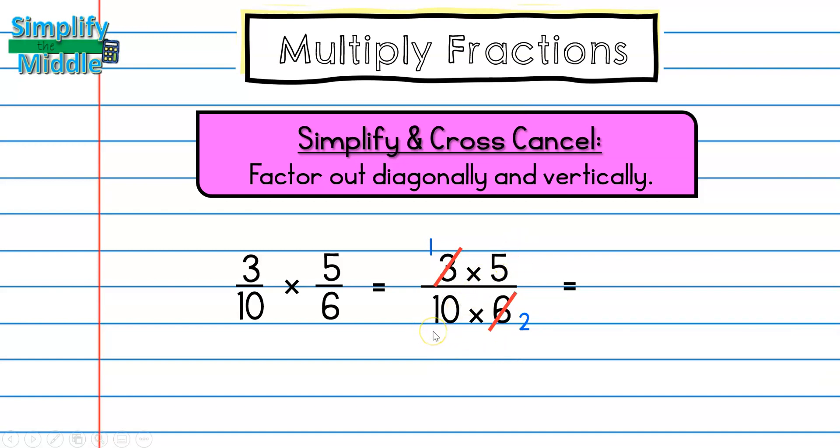Across I have 5 and 10 have a common factor of 5. So if I cross out my 5, I get 1 because 5 divided by 5 is 1. If I cross out my 10, I get 2 because 10 divided by 5 is 2.